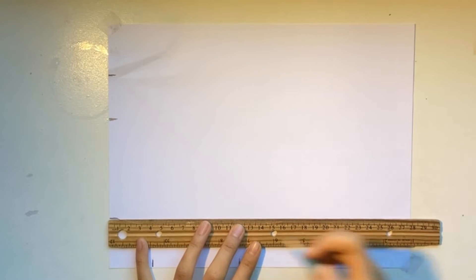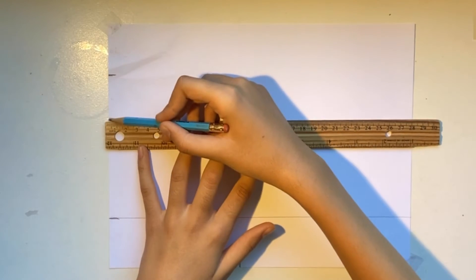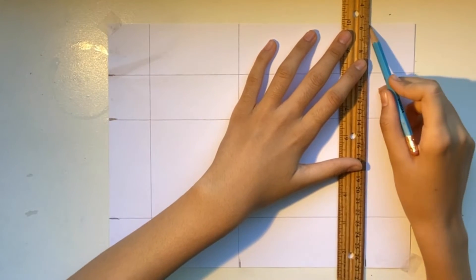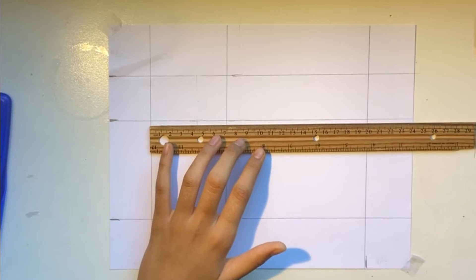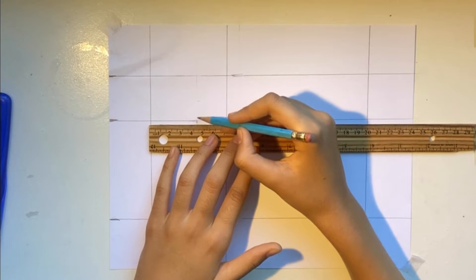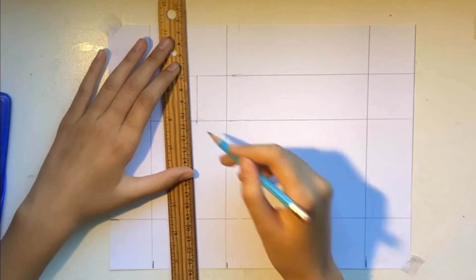Now, draw horizontal and vertical lines coming out of the marks that you made. At the top of your left middle rectangle, make a mark 4 cm away from the side like I have shown. Draw a line coming out of that mark.